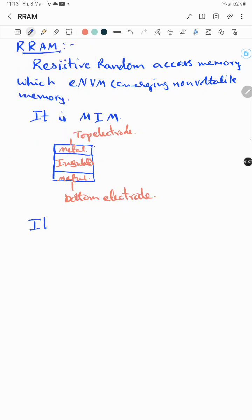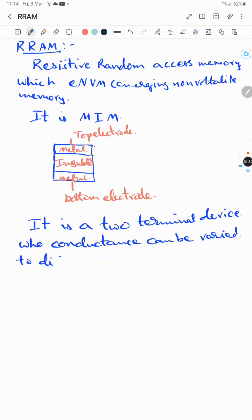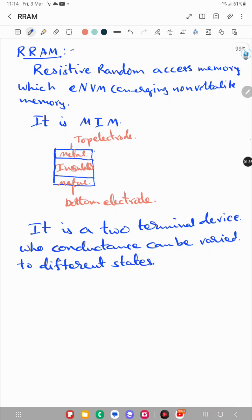It is a two-terminal device whose conductance can be varied to different states. It can be used as a synapse in neural networks.